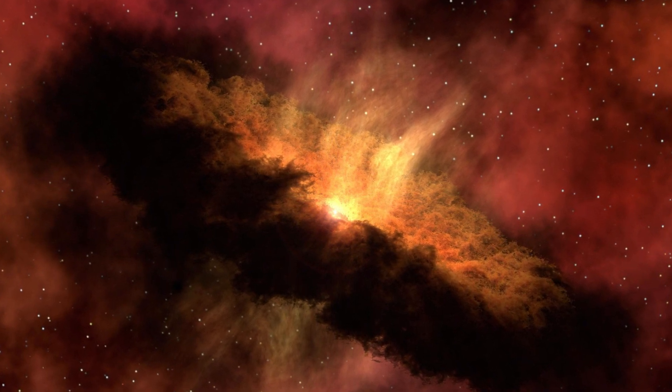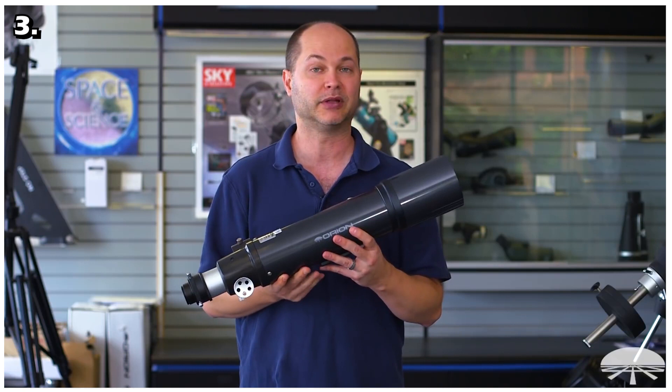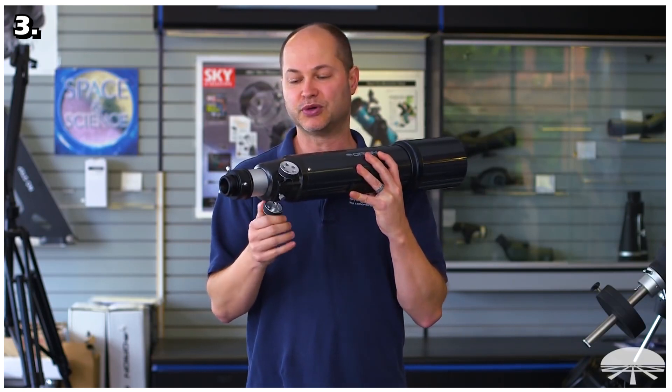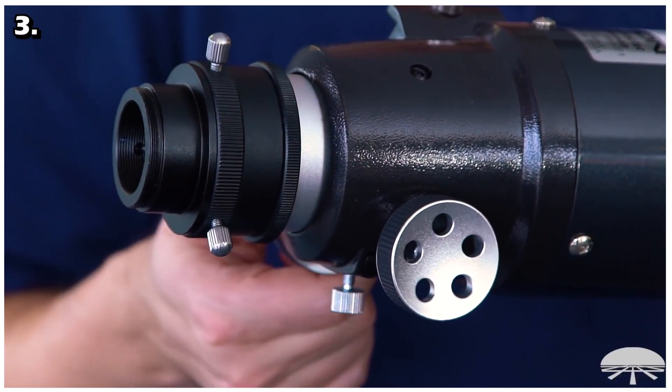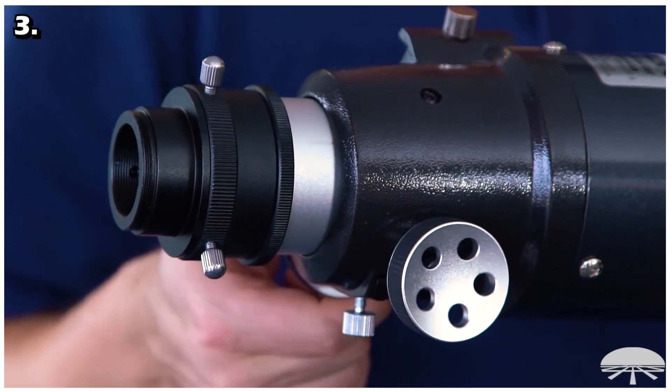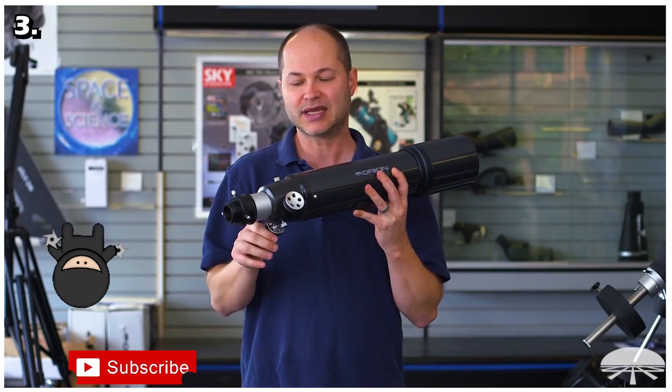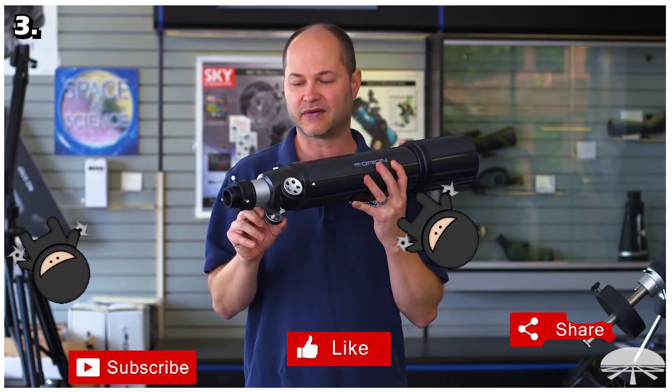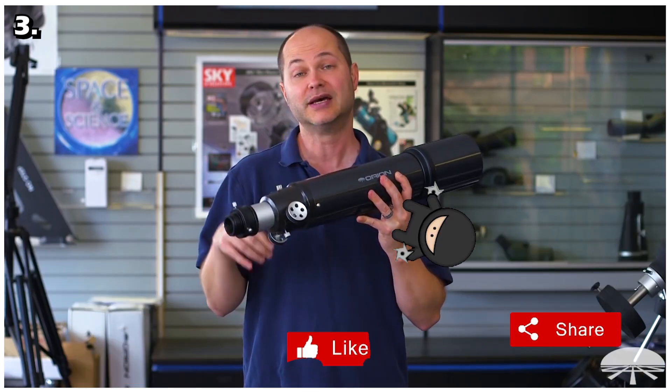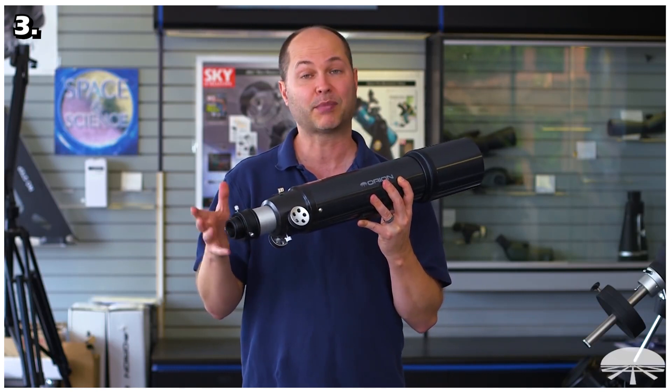The ED80 refractor telescope has a multi-coated 80mm aperture objective lens with extra low dispersion optical glass. The high quality glass greatly reduces the chromatic aberration inherent in standard achromatic refractor telescopes. Through this telescope, images and views appear more sharply focused and color ringing around bright objects is lessened dramatically.